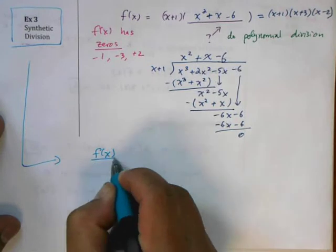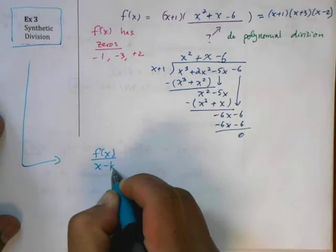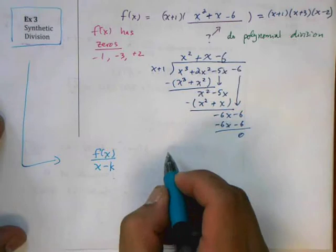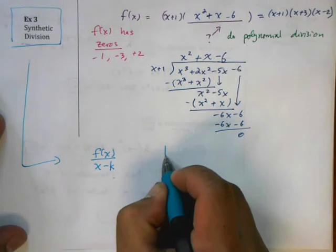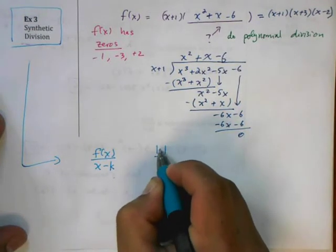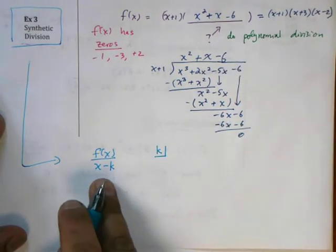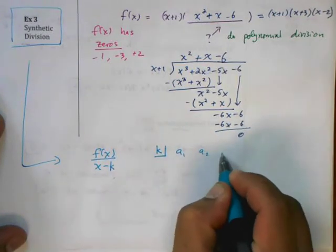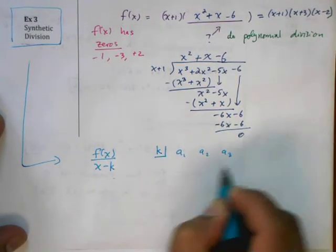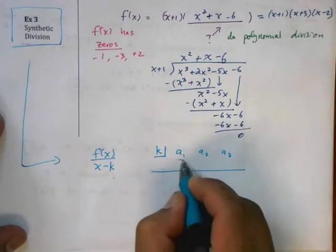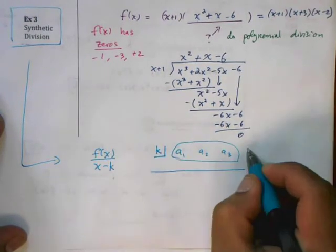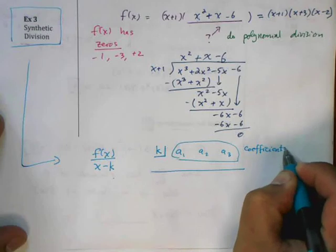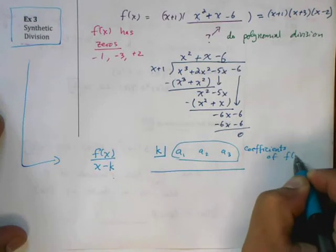So, if you have synthetic division, let me write the definition down here, since I already used up all this space. f of x divided by x minus k, and notice here, it has to be x minus k. Then, this is what we can do. We create a little box, we put k inside of it, and then we put a1, a2, a3, and so on, where all of these here are coefficients of f of x.